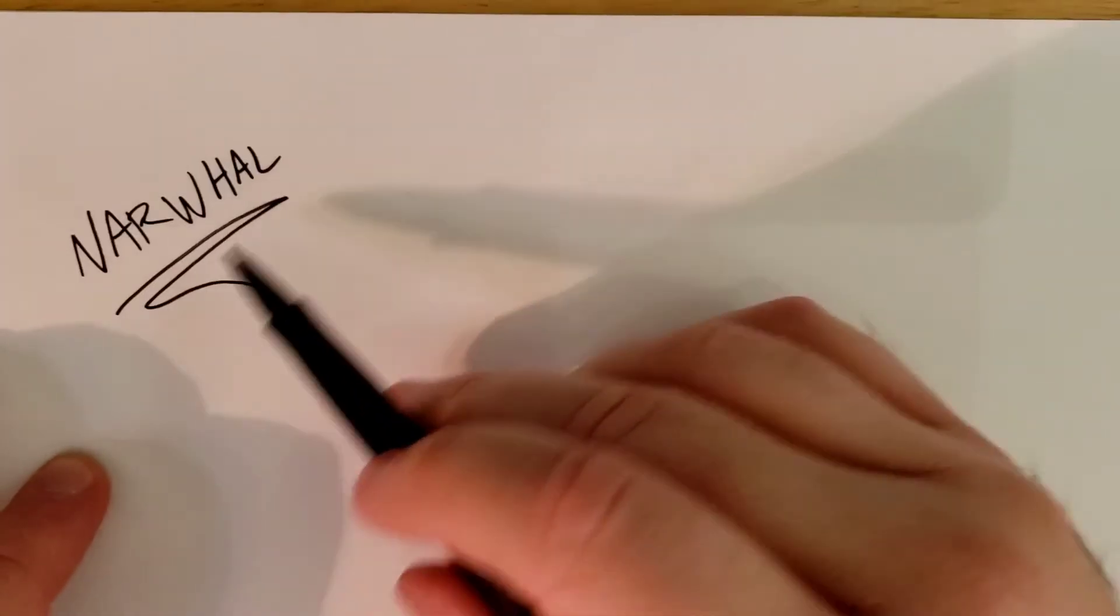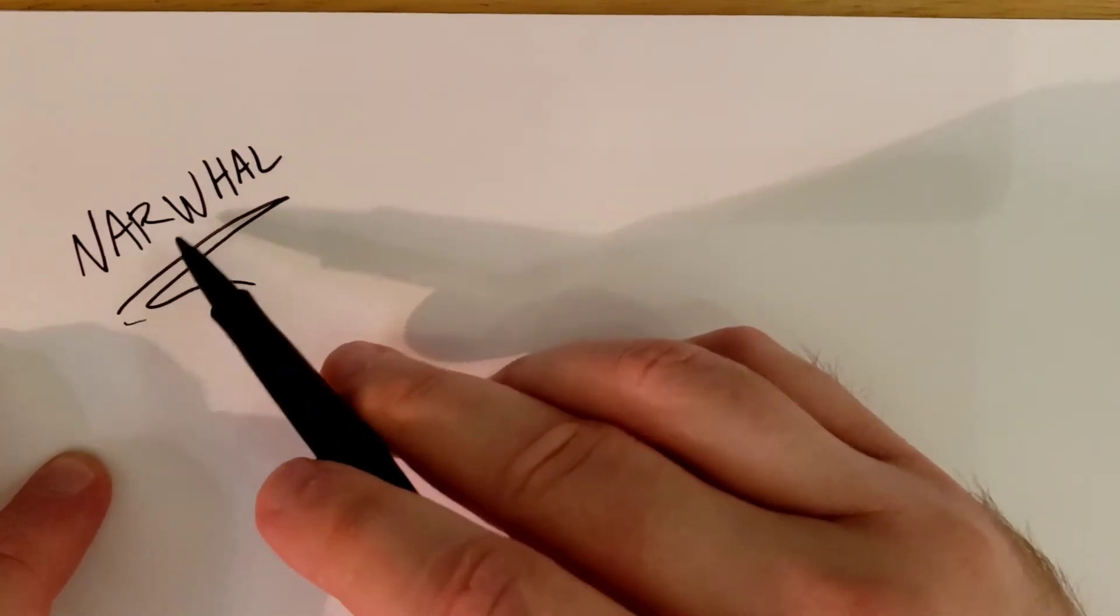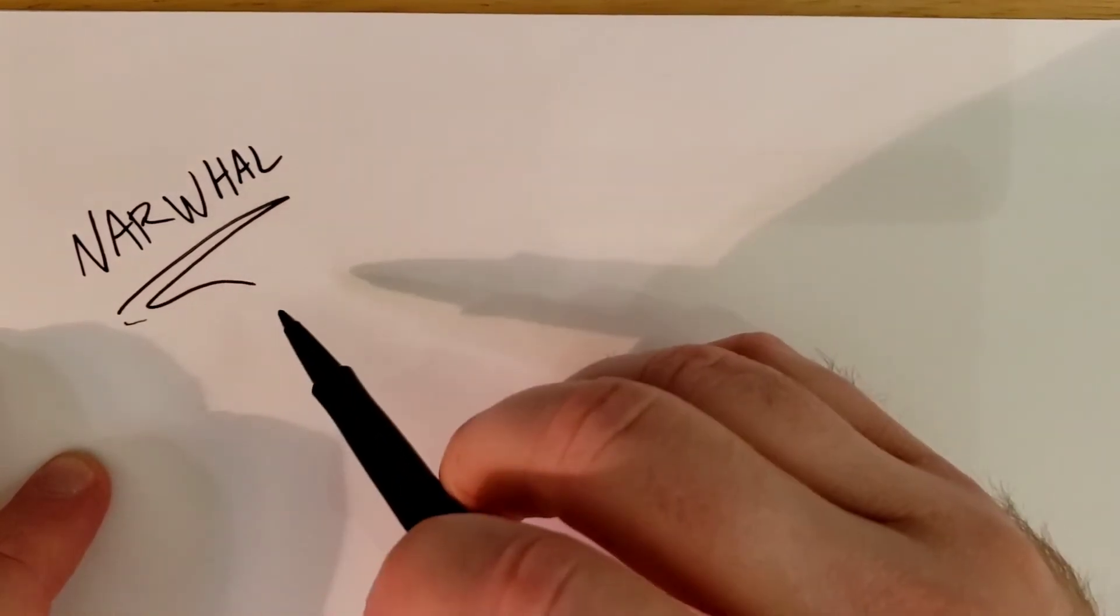Alright art students, today we're going to be drawing an animal called a narwhal, N-A-R-W-H-A-L. They're sometimes called the unicorns of the sea, and I'll show you why in just a little bit. Go ahead and grab your pen, your paper, pencil, whatever you need to draw with, and here we go.